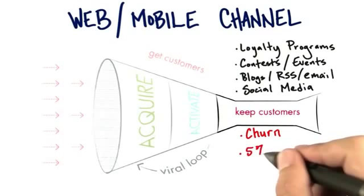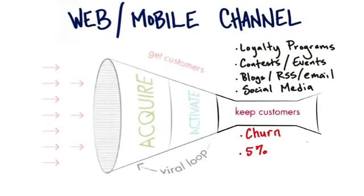Imagine if you were losing 5% of your customers a month — in three years you'd only have about 16% of them left. But imagine if you could reduce churn to 1%, so that every month only 1% of customers left. After 36 months with 1% attrition, you'd have 70% of your customers left.